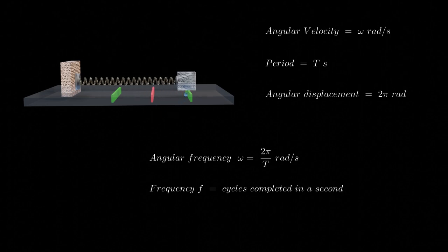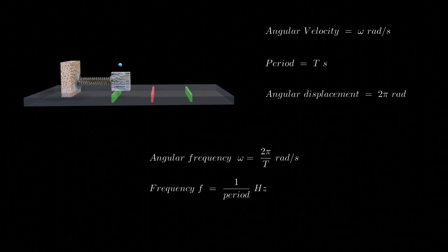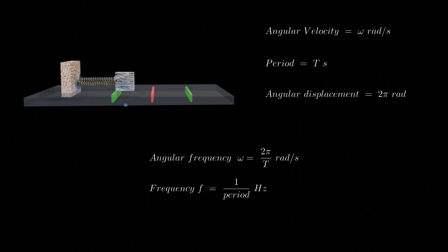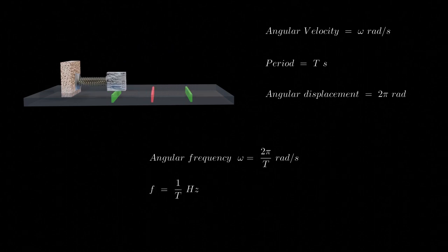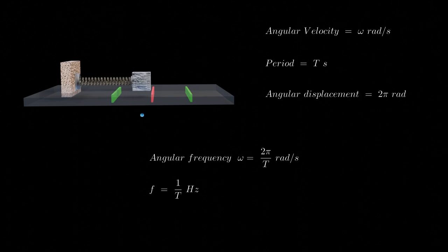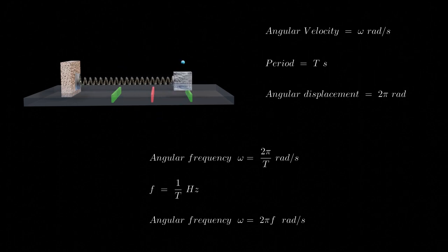Frequency is defined as the number of complete cycles completed in a second, and it is the reciprocal of the time taken to complete one cycle, expressed in hertz. In mathematical terms, frequency can be denoted as the reciprocal of the period. By substituting the frequency into the expression for angular velocity, we can rewrite the angular frequency omega of the spring-mass system as shown on the screen.